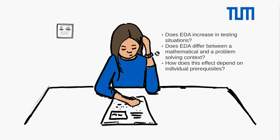How does this effect depend on individual prerequisites, such as math trait anxiety and self-concept?